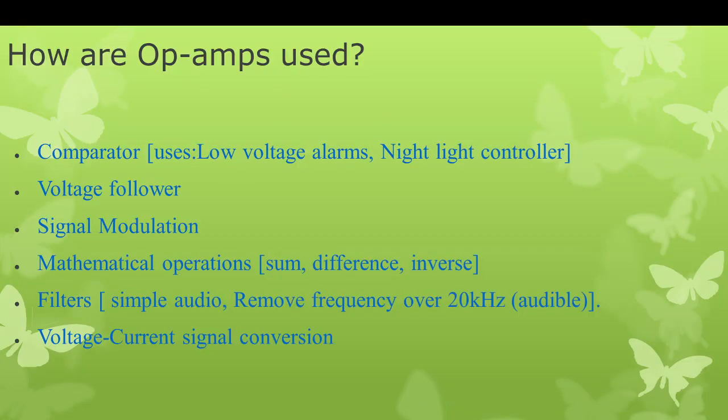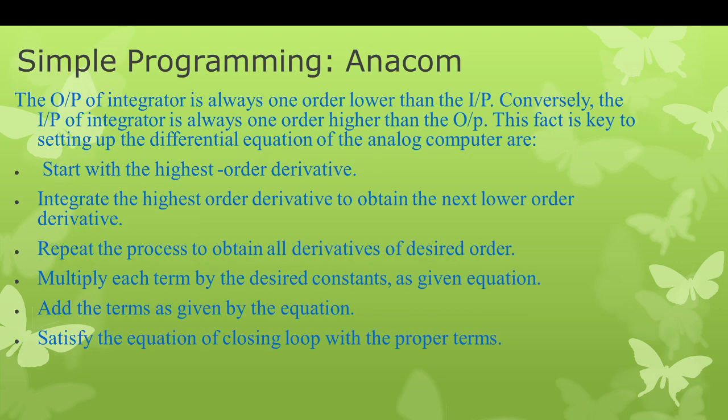Op-amps are used for signal modulation, mathematical operations, filters, and voltage conversion. For simple analog computer programming — when using the analog computer for mathematical operations — the output of a differentiator is always one order higher than the input, and conversely, the output of an integrator is always one order lower than the input.